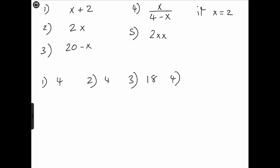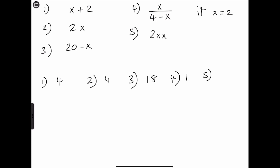For expression 4, it will be 2 divided by 4 minus x, which is 2 divided by 2, and that gives us 1. For expression 5, we get 2 times x times x, which is 2 times 2 times 2, giving us 8.